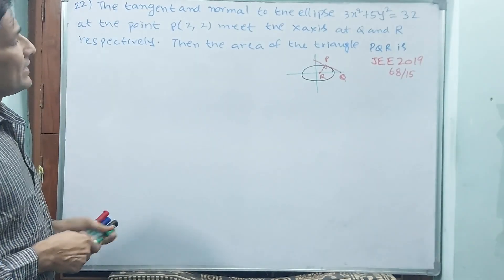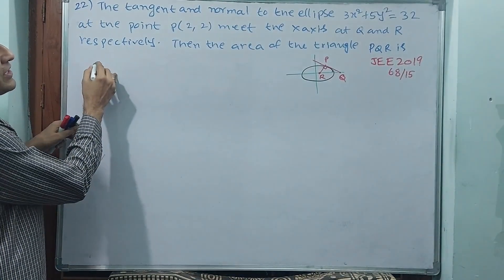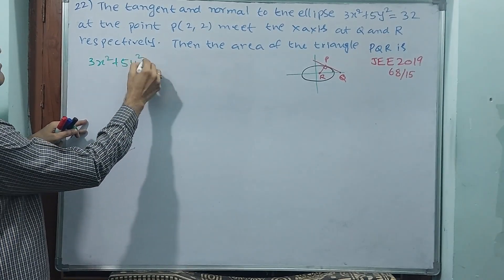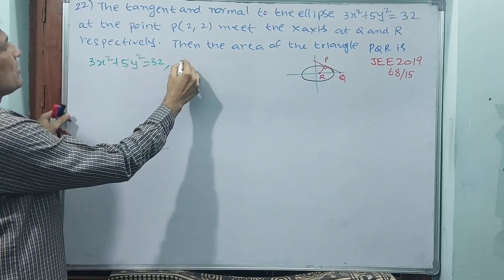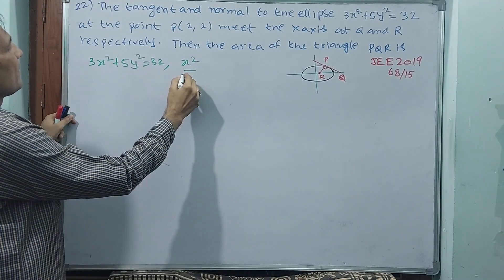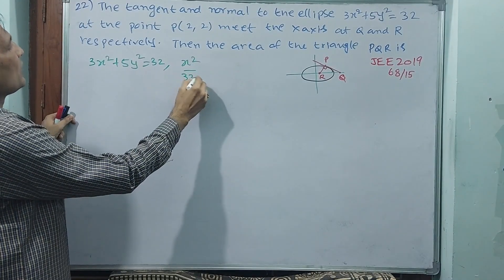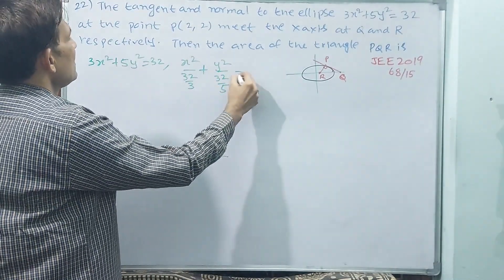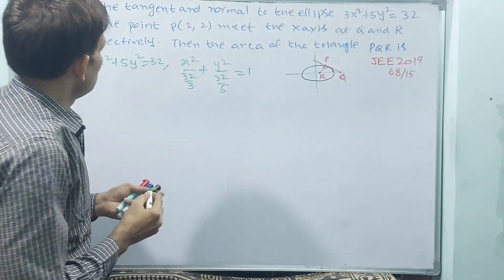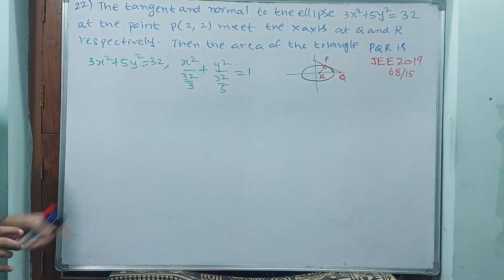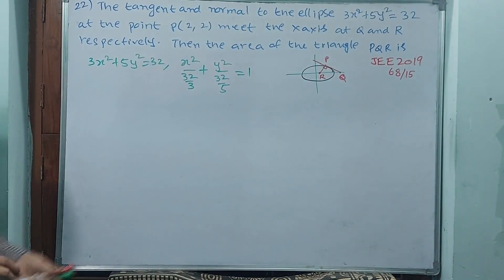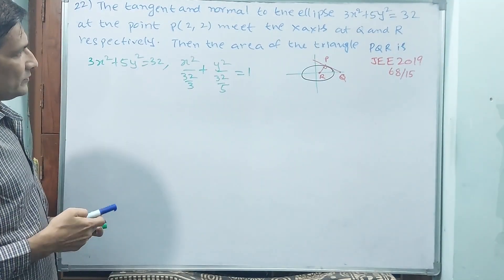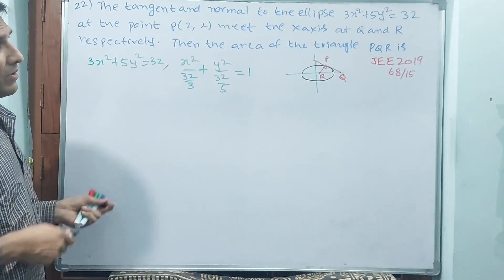Let's see. First find the tangent. Before finding the tangent, shall I write this equation? See 3x squared plus 5y squared is equal to 32, or x squared by 32/3 plus y squared by 32/5 is equal to 1. Normally this is your equation, why? Because I have divided with 32.